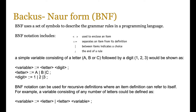BNF is basically an alternative to syntax diagrams — think flowcharts and pseudocode. BNF uses a set of symbols to describe the grammar rules in a programming language. The notation includes: less-than and greater-than signs to enclose an item; colon-colon-equals to separate an item from its definition; a straight line between items to indicate a choice; and a semicolon at the end of a statement to indicate the end of the rule.